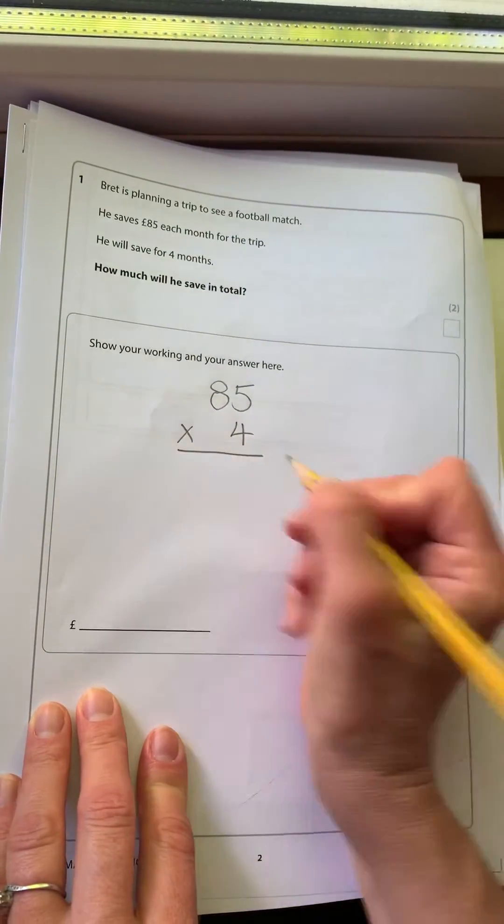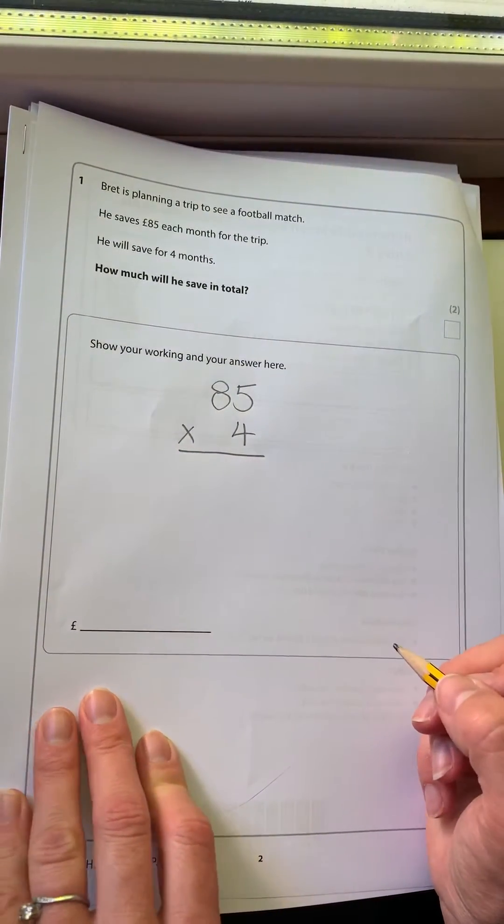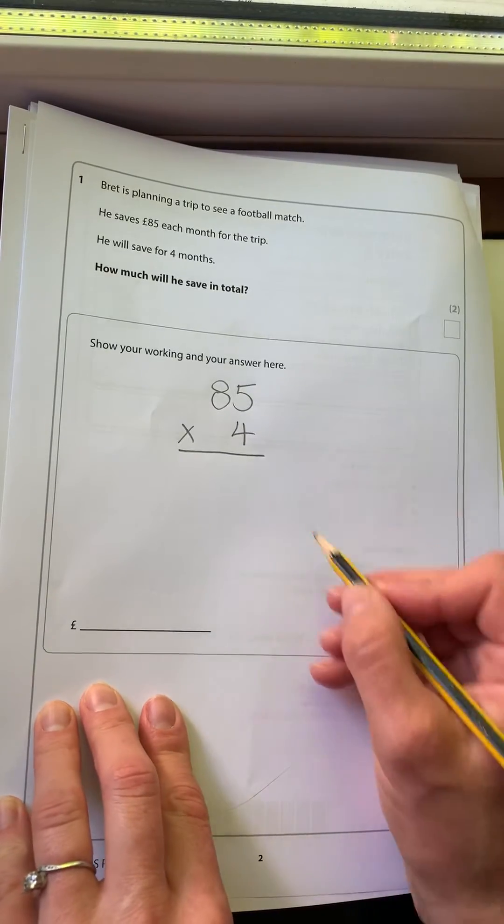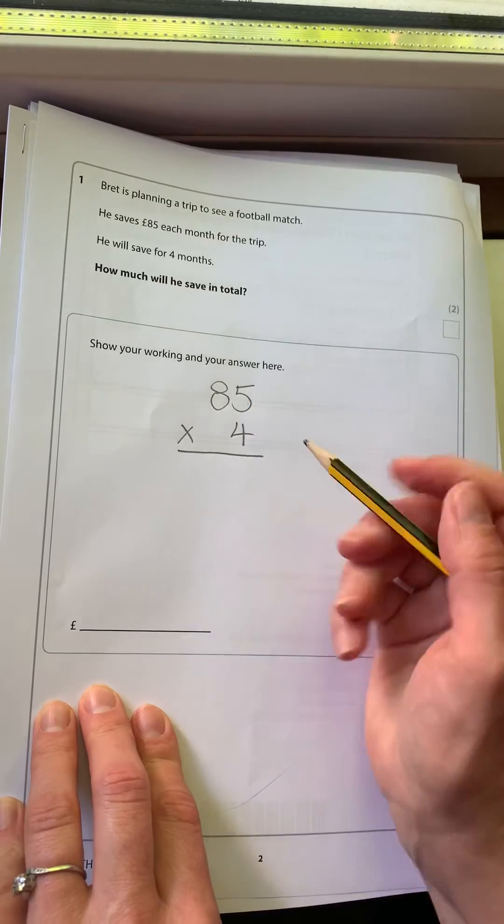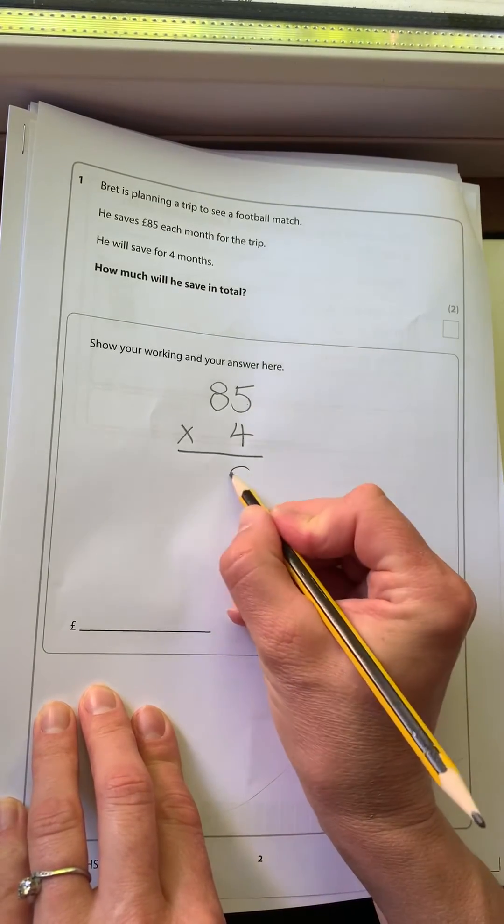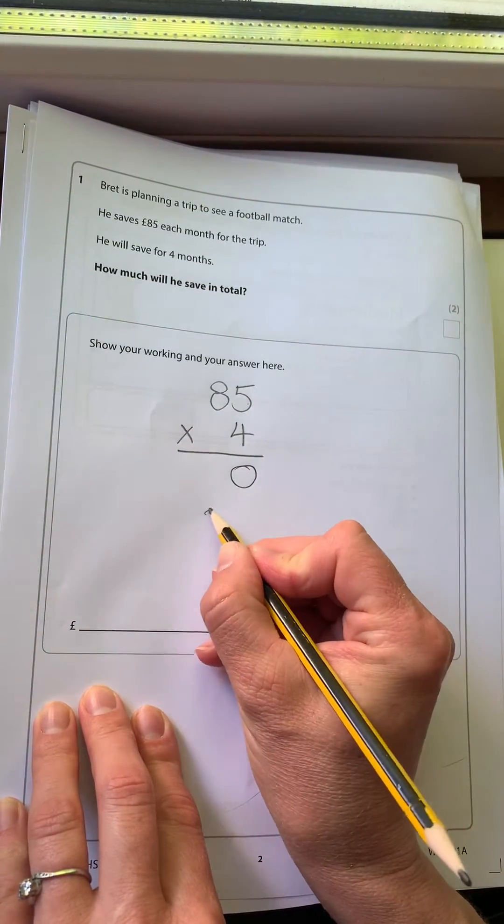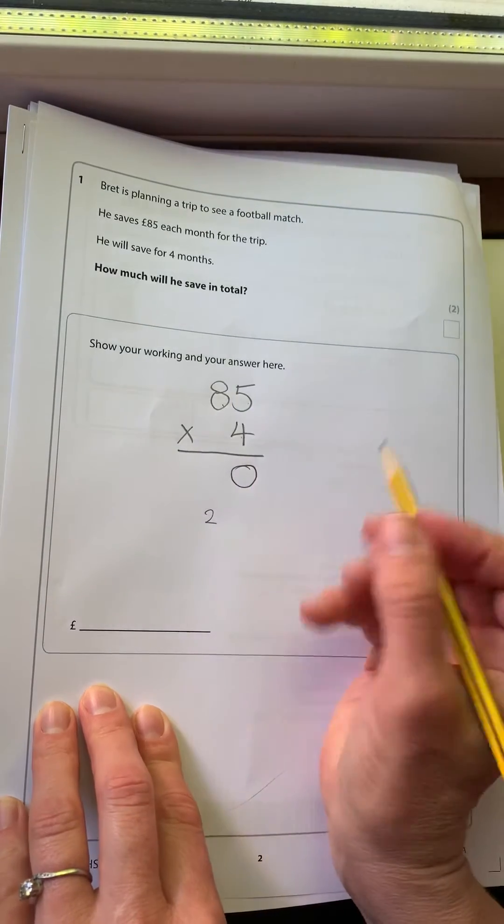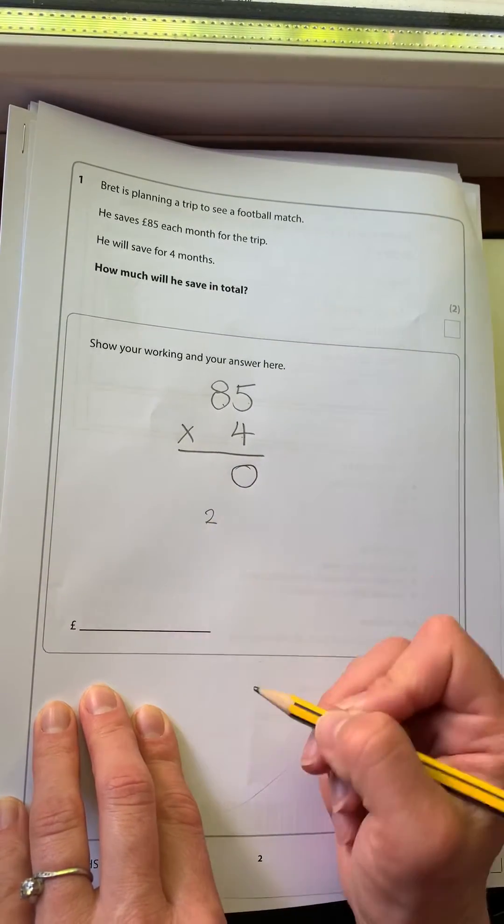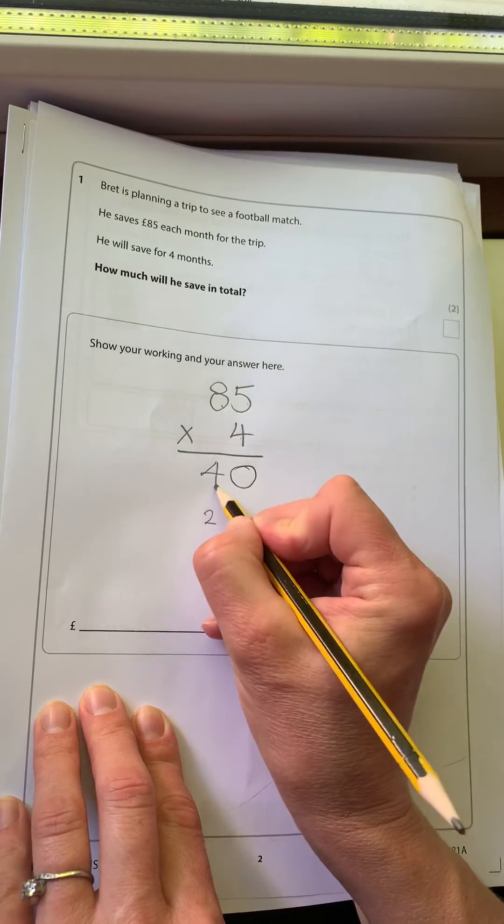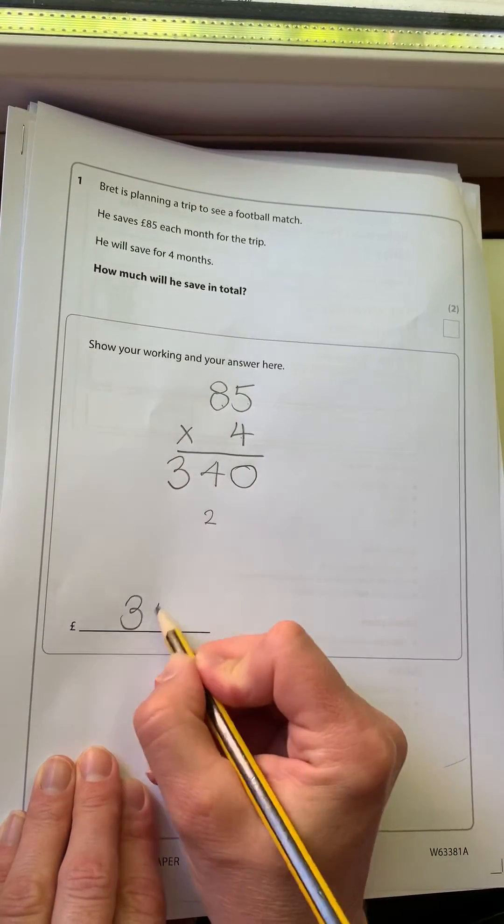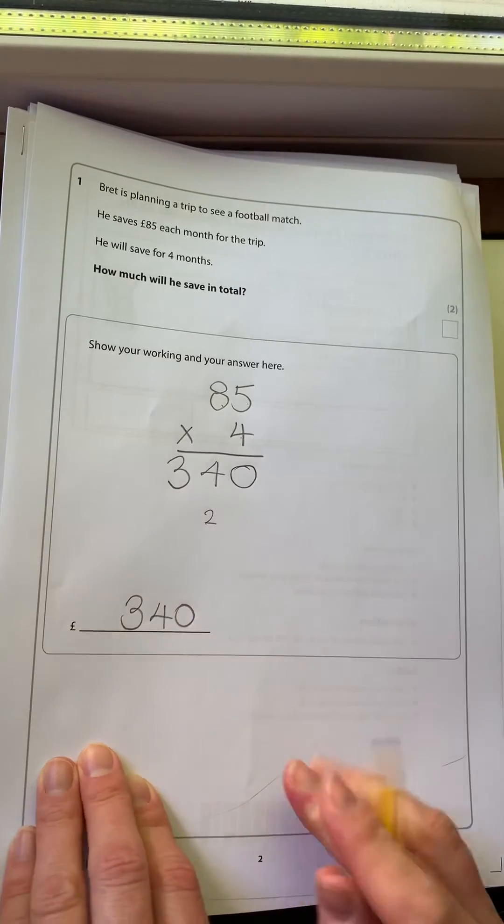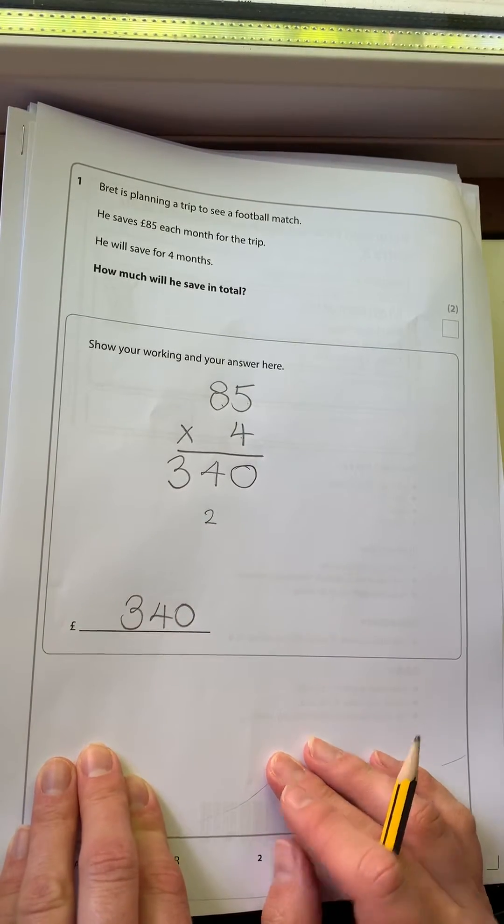And again, different ways to do this. I'm going with a traditional method that a lot of people learned at school, but you can do whichever way you find easier. 4 times 5, 20, so I'll put my 0 and carry the 2. 4 times 8 is 32, plus the 2 gives us 34. So he will save £340 in total.